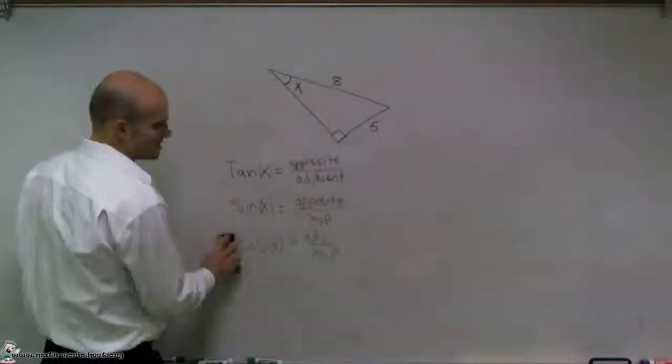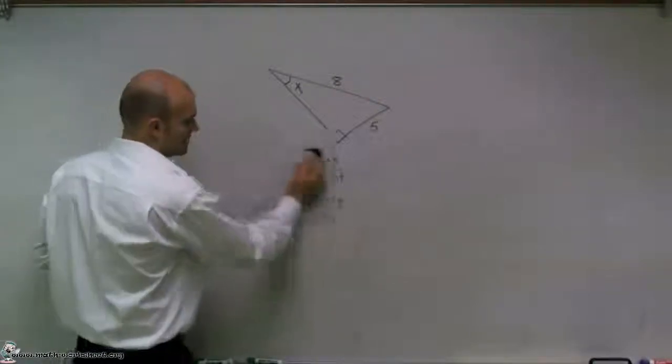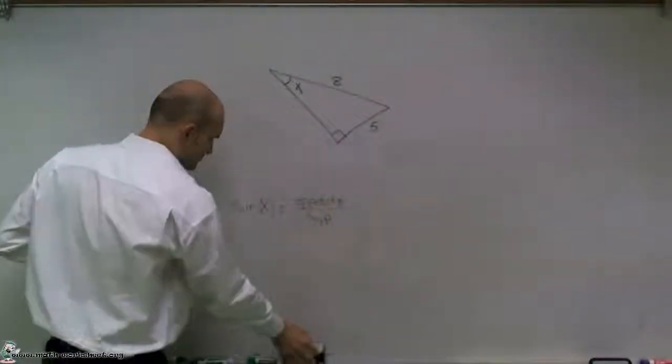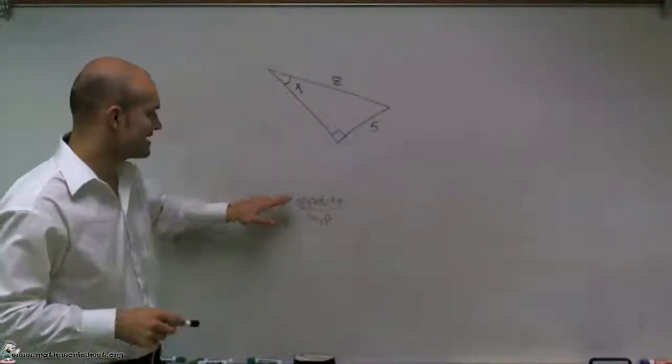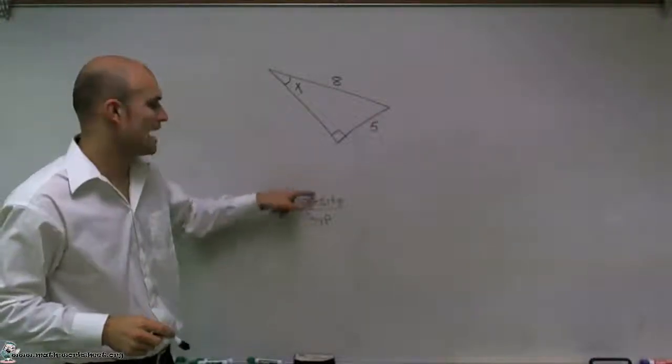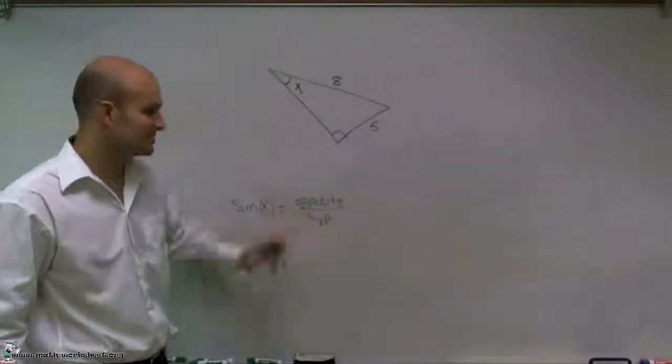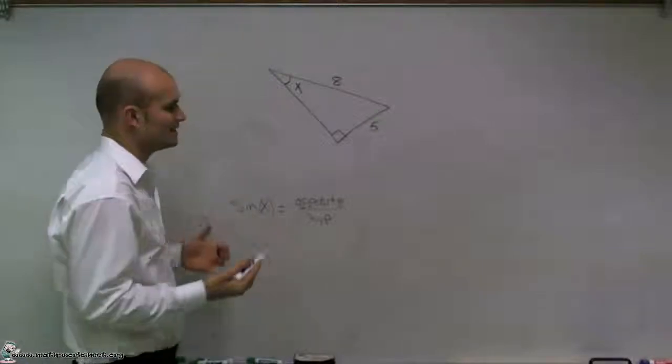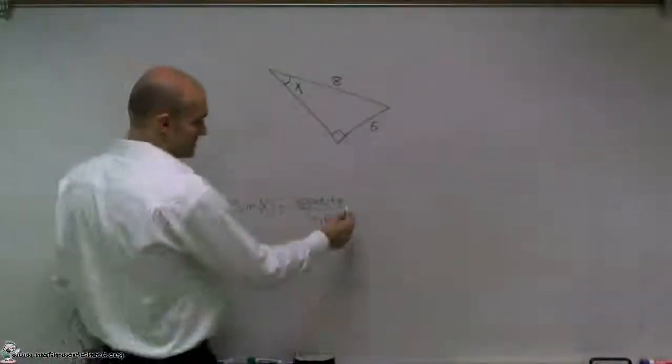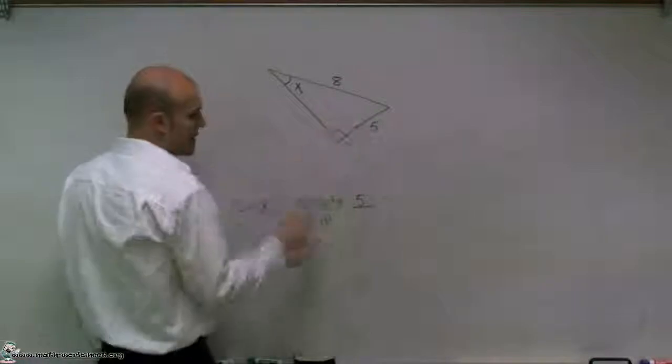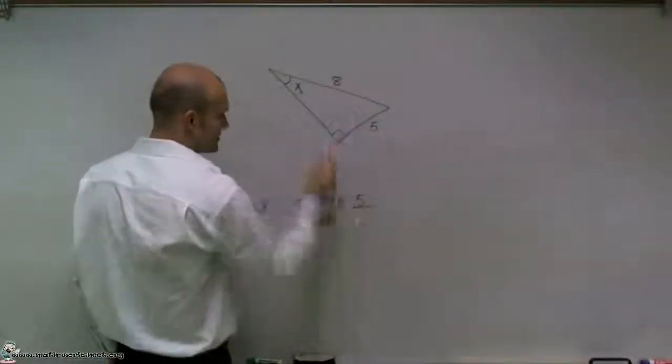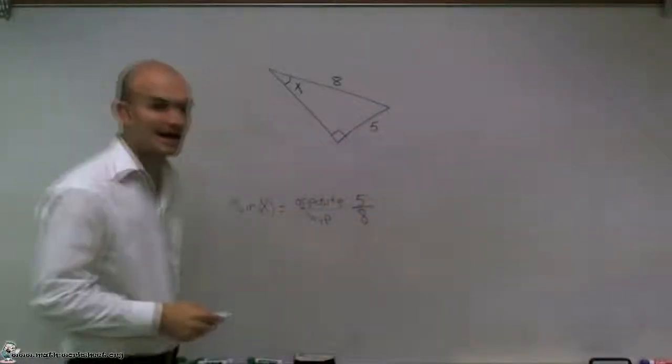And what I look at is I can say the sine function deals with opposite over hypotenuse. So therefore, I'm just going to forget about the tangent and the cosine. So now I have sine of x equals the ratio of the opposite side over the hypotenuse side. So now what I need to do is say, well, I know the opposite side is equal to 5, and the hypotenuse is equal to 8.